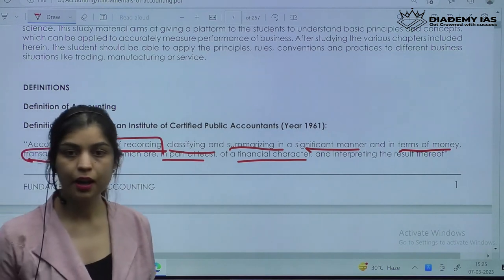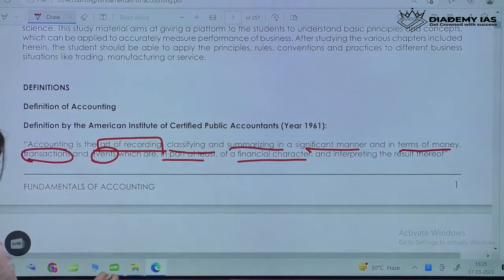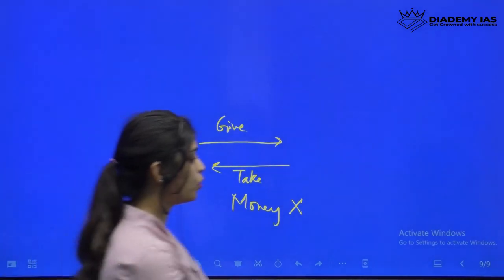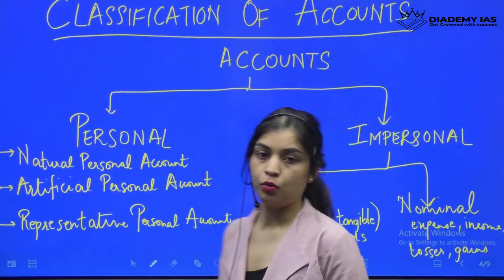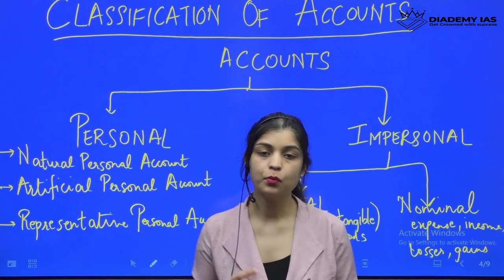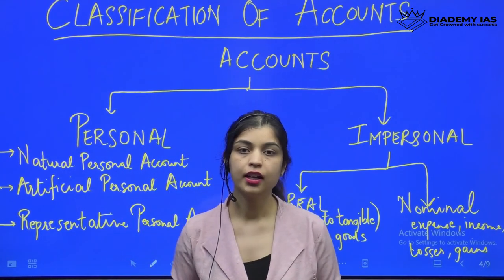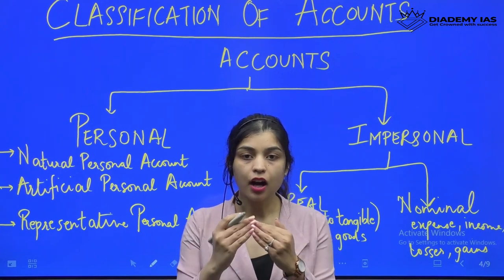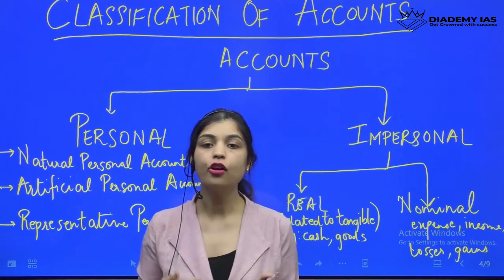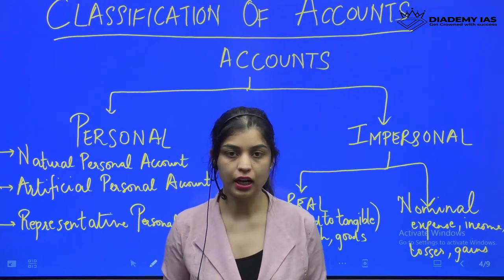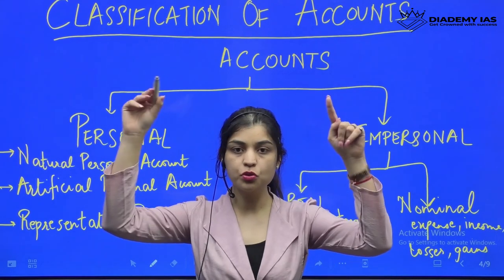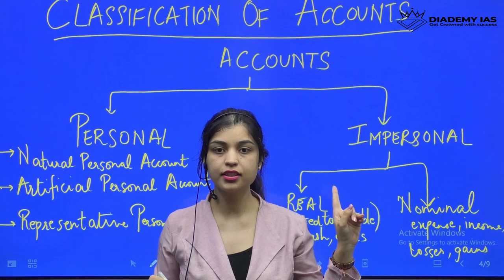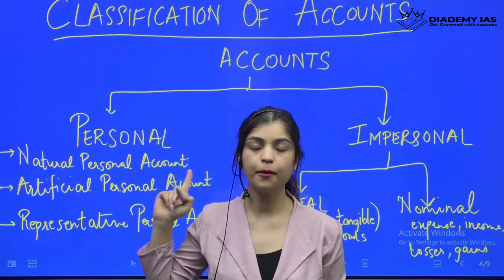Now that we know what accounting means, let's look at how we classify accounts. Accounts can be classified into two ways: the first is your impersonal account and the second is your personal account. Let's look at personal account first. The word itself — 'person' — refers to an individual. Personal accounts cover all individual accounts.